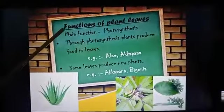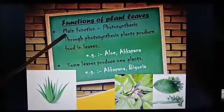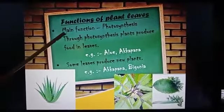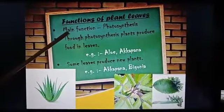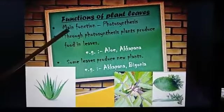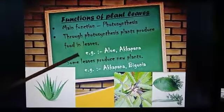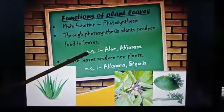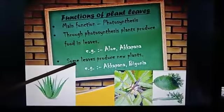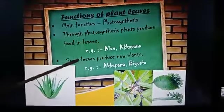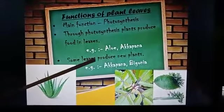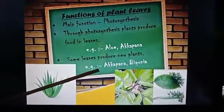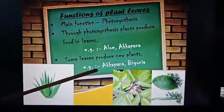Function of plant leaves. Main function: photosynthesis — through photosynthesis, plants produce food in leaves. Example: yellow and acropana. Some leaves also produce new plants. Example: acropana and begonia.